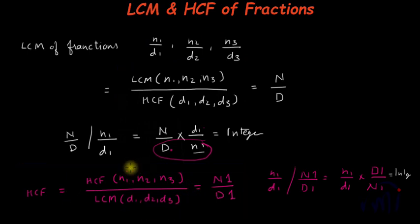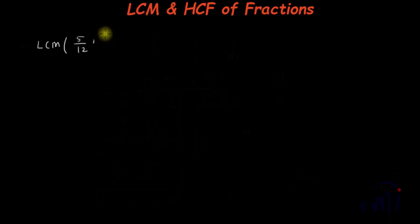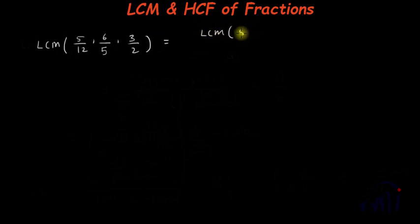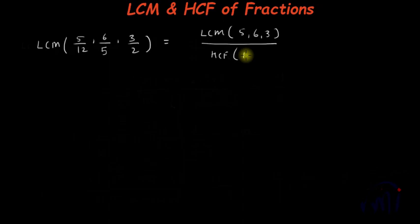Now let's take a sample example for each, and then in the next video we'll solve a few word problems based on these concepts. Let's find the LCM of the fractions 5/12, 6/5, and 3/2. The LCM of any fractions equals the LCM of the numerators — in this case 5, 6, and 3 — divided by the HCF of the denominators, which is the HCF of 12, 5, and 2.